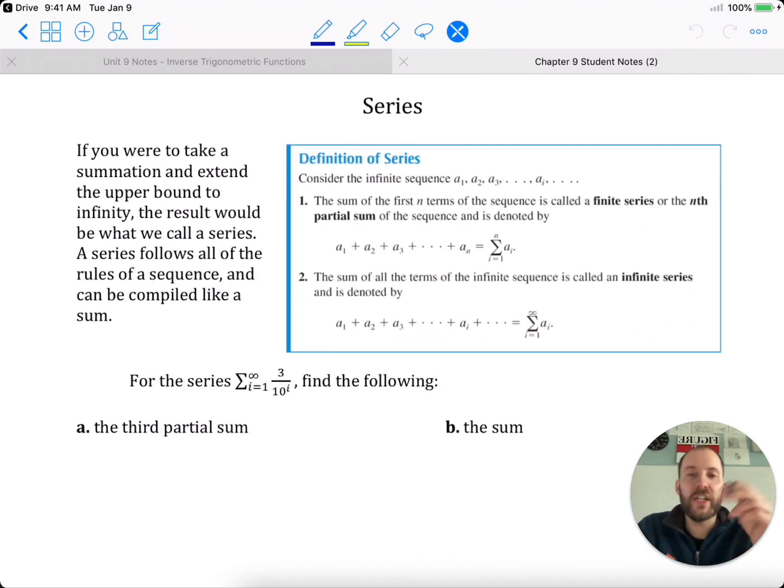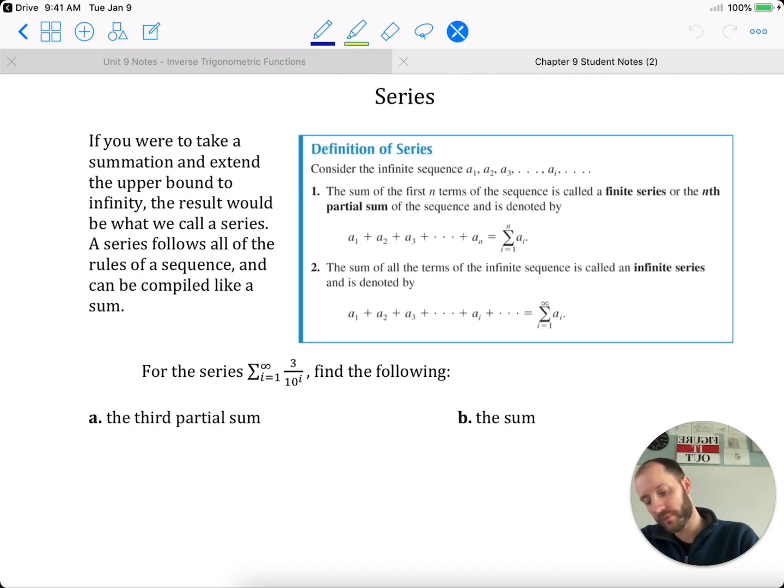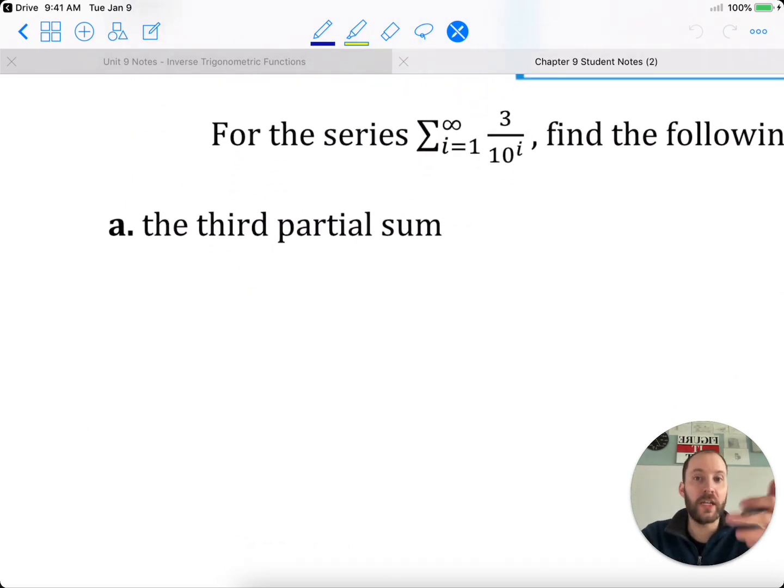Series are where a summation extends the upper bound to infinity. Now of course you won't always get an answer, because if your terms infinitely get bigger and bigger, your sum infinitely gets bigger and bigger. So infinite summations don't always work. Just kind of put that out there. Although sometimes they do. For example, this right here: 3 over 10 to the power of i, from 1 to infinity.